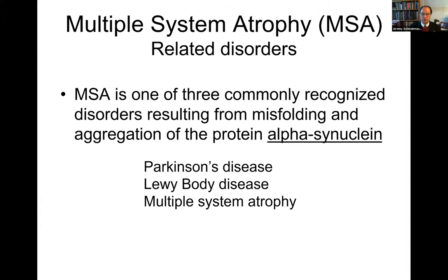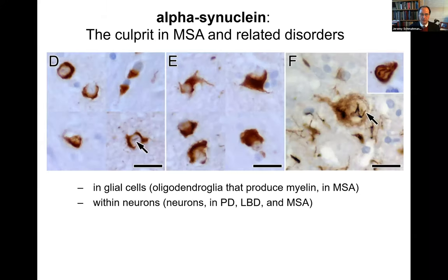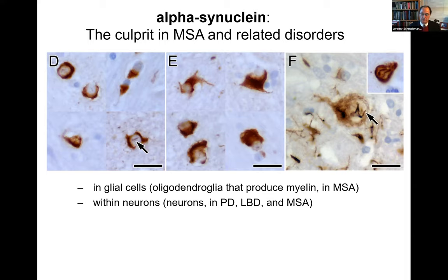MSA is one of three conditions that are a result of a problem with alpha-synuclein aggregation and misfolding. Parkinson's and Lewy body disease are well known to you; MSA is the smaller group in this three that we need to understand in greater detail. Alpha-synuclein aggregates in glial cells in MSA, particularly in the oligodendroglia that produce myelin. It affects neurons in Parkinson's, Lewy body, and MSA — here are the neurons in the different conditions with the misfolded and aggregated alpha-synuclein cytoplasmic inclusions.